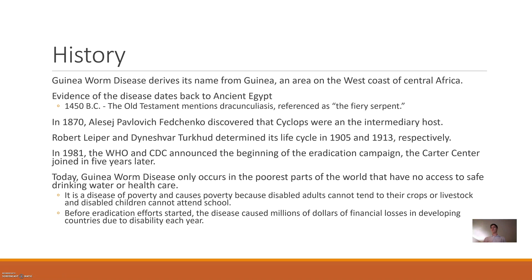In 1981 the World Health Organization and the Centers for Disease Control announced the beginning of their eradication campaign, and the Carter Center closely followed and now spearheads the campaign. Today guinea worm disease only occurs in the poorest parts of the world, because they lack access to clean drinking water. It is caused by poverty and also causes poverty, because affected people frequently develop disabilities and can't tend to their crops.